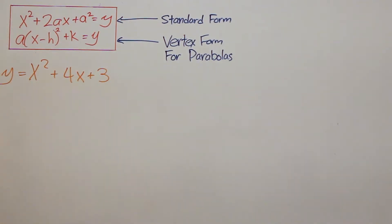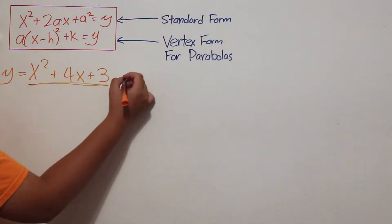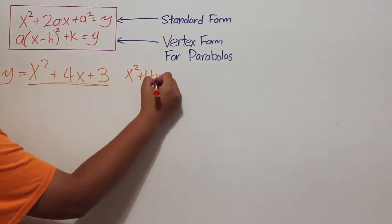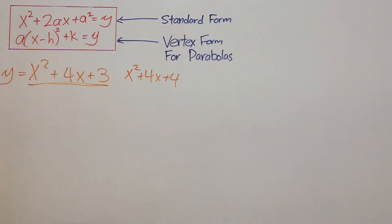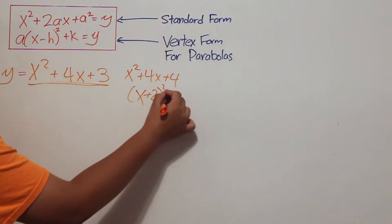For our first example, we have x squared plus 4x plus 3 equal to y. As you can see, our given example is similar to x squared plus 4x plus 4, which would have been quantity x plus 2 squared.